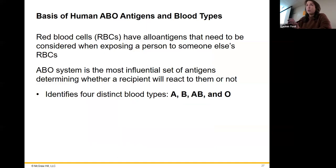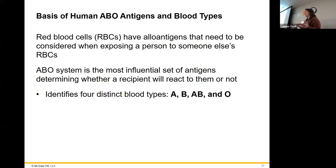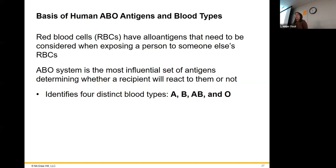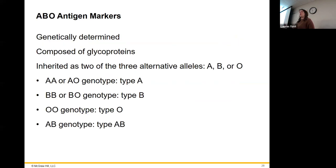Type two deals with the blood types. Red blood cells have allo antigens that we have to consider when giving blood to somebody. When you donate blood and they tell you your blood type — A, B, AB, or O — those are the four possibilities, other than positive or negative. It just has to do with sugars on the coating of your red cells.